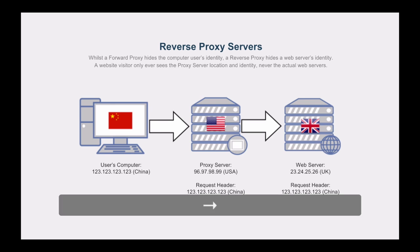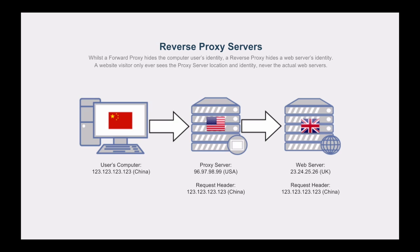This diagram looks very similar, but what's happening here is the same Chinese user is accessing a reverse proxy in America. In this situation, the UK website is trying to pretend that it's located in the US, or the US server is doing something special with the traffic before forwarding it on to the web server based in the UK. So as far as the Chinese user is concerned, the website hosted in the UK is actually hosted in the US.